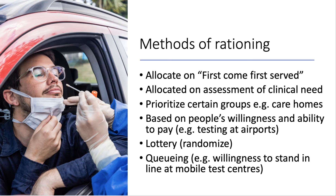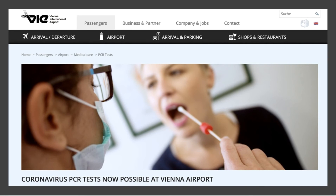You could randomize the whole process — a kind of COVID test lottery — and I'll leave you to think about the costs and benefits of that. Another option is based on willingness to stand in line at mobile test centres, which is a form of rationing. Finally, you might move towards basing tests on willingness and ability to pay, and we're starting to see aspects of that as the private sector responds by providing testing services for those able to pay.